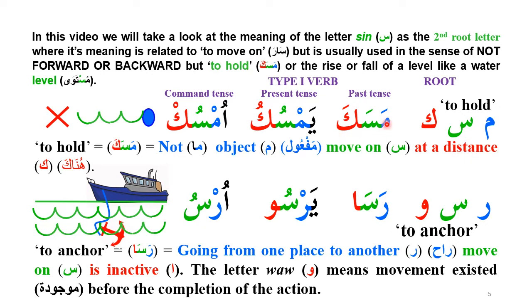'Masaka' means: Ma (not) + Sara (going) + Mafuul + Masa Hunaka — you can read it almost as an abbreviation. Ma, one meaning of which is 'not,' combined with Sara and Kaf gives the meaning 'not going there,' i.e., to hold in place.